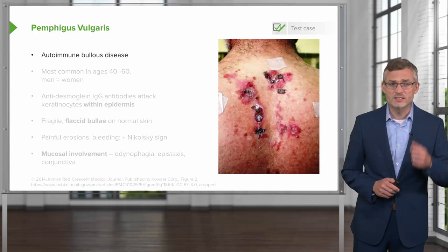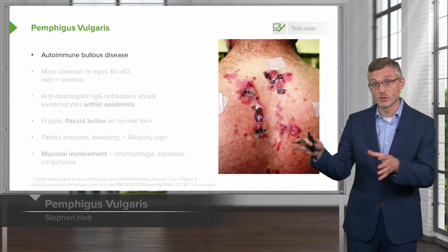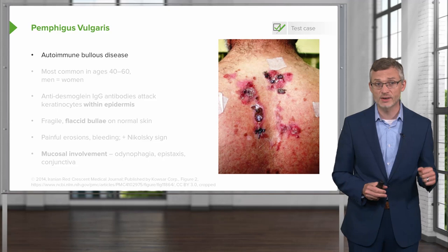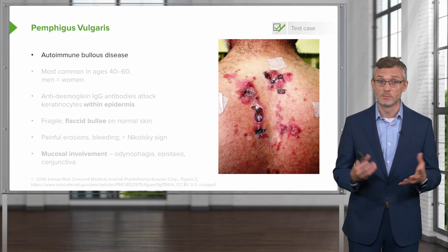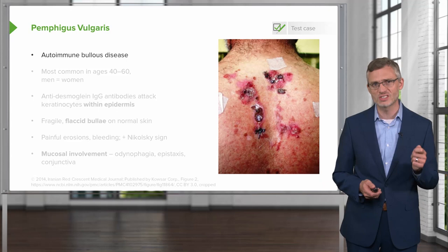Next up, pemphigus vulgaris. In contrast to bullous pemphigoid, it's important to try and make sure we separate those two disease processes. Pemphigus vulgaris is much more significant and potentially can be a fatal disease process. Both of them are autoimmune diseases, but where the immune-mediated attack occurs is very important.